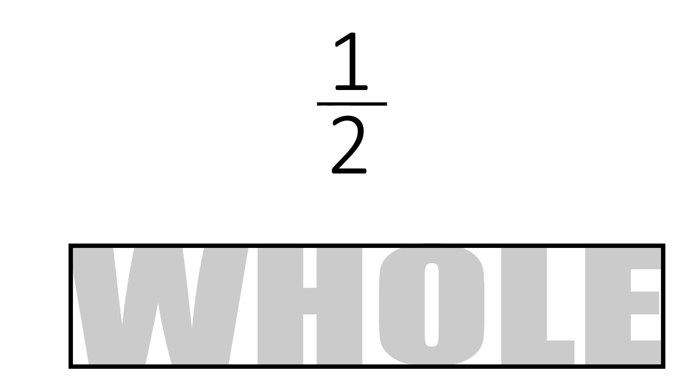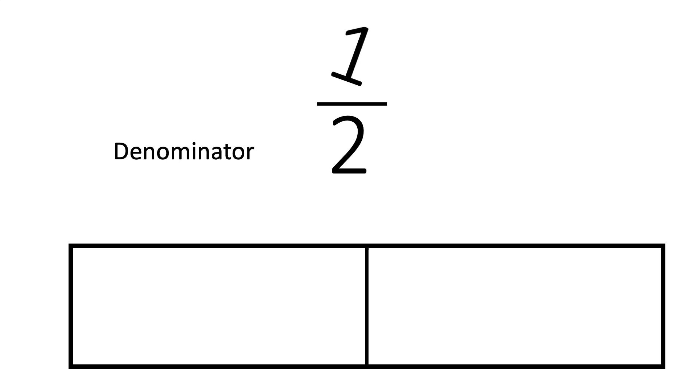The bottom number, the denominator, shows us how many parts we have all together. In this case, we have two equal parts. The top number, the numerator, tells us how many of those parts we have. So here we have one out of two parts, or one half.